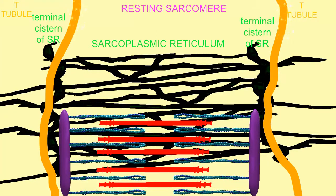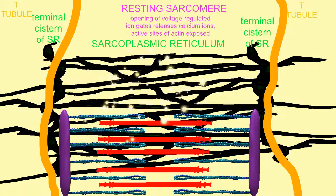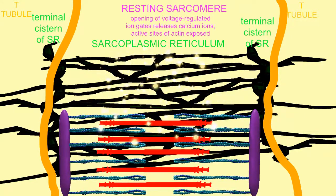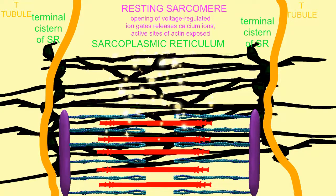When the electric action potential reaches the sarcoplasmic reticulum, it causes the opening of voltage-regulated calcium channels. These channels are closed at certain voltages, but then open at others, such as the voltage of the action potential.